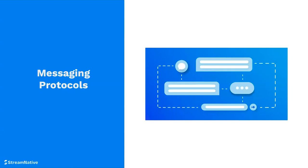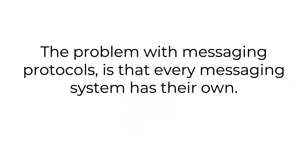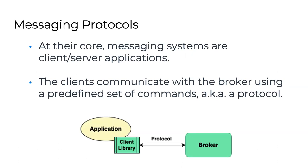The problem with messaging protocols is kind of like opinions — everybody has one and they don't always line up with one another. Messaging systems have been around since 1994 when IBM MQ came out as a way of sending data from point A to point B. So why do we keep reinventing this? Every time we reinvent it, we manage to make a different messaging protocol, because at their core, messaging systems including Apache Pulsar are client-server applications. At a very low level, we exchange primitives to send data, receive data, move cursors.